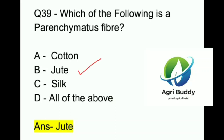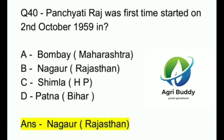Question 40. Panchayati Raj was first time started on 2nd October 1959 in? A. Bombay. B. Nagaur. C. Shimla. D. Patna. And the answer is Nagaur, Rajasthan.